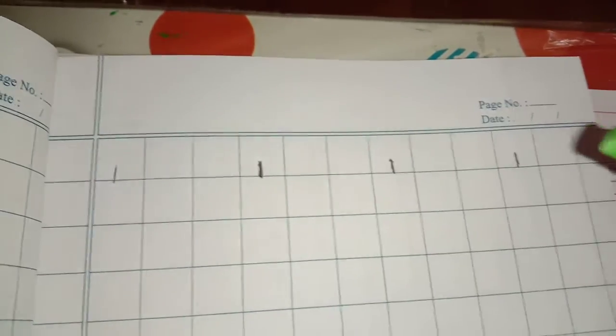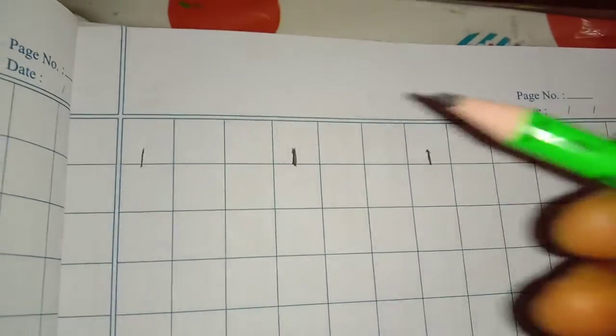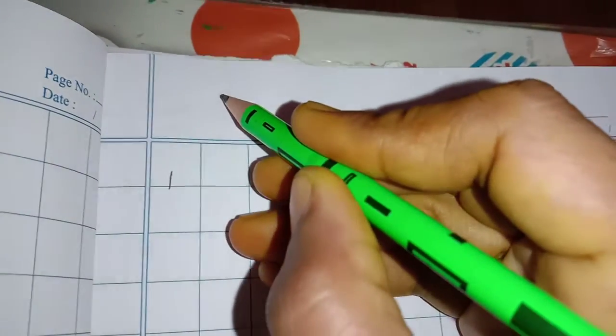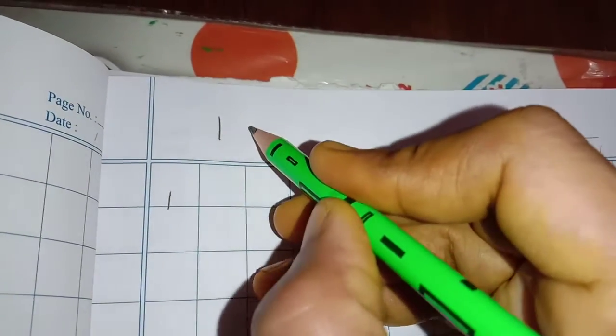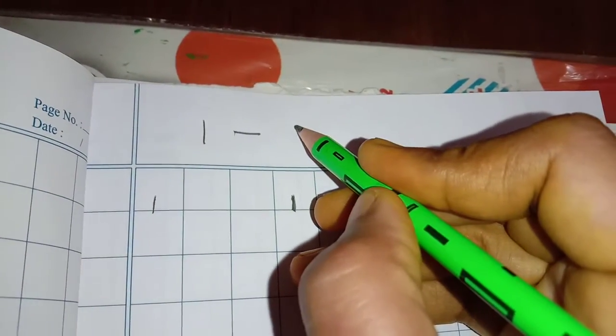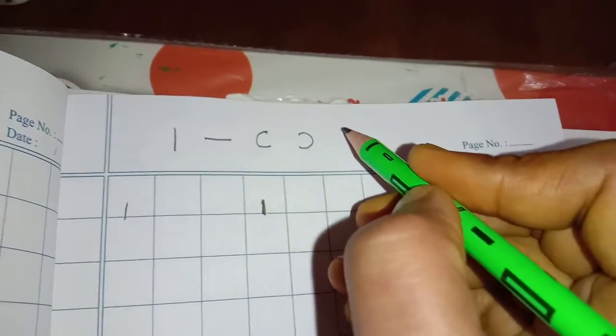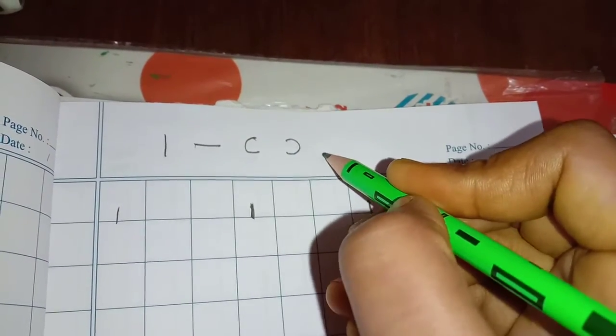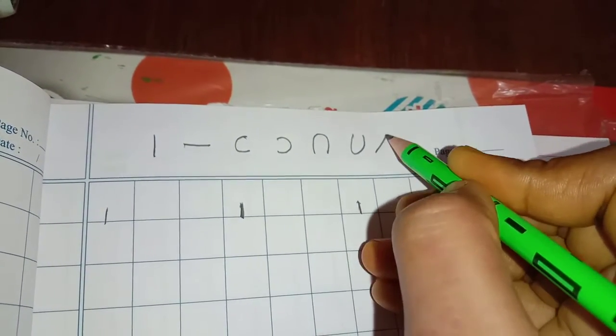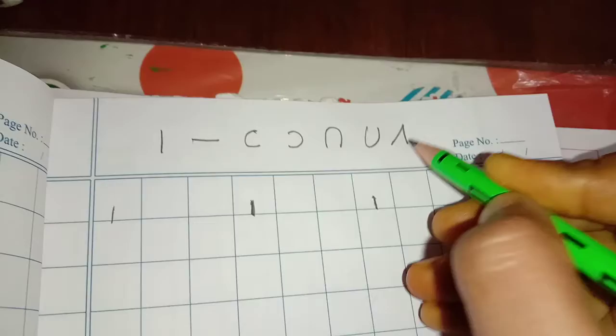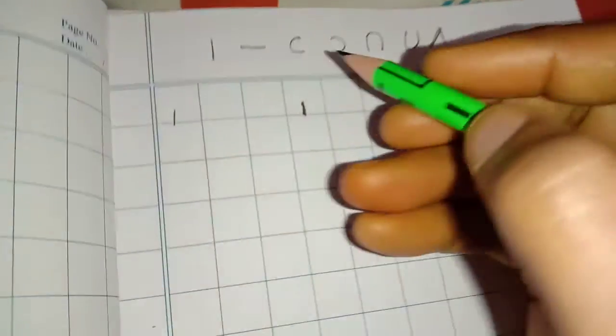Today we are going to see number writing using strokes. Standing line, sleeping line, open curve, closed curve, upward curve, downward curve, and a slanting position like a cone. Based on these strokes, we are going to see number writing.